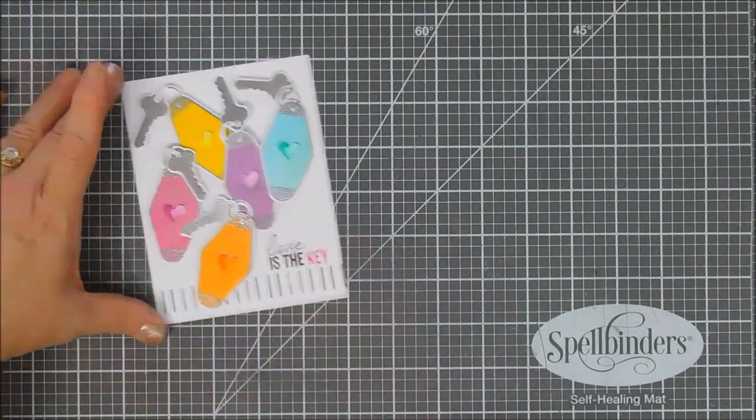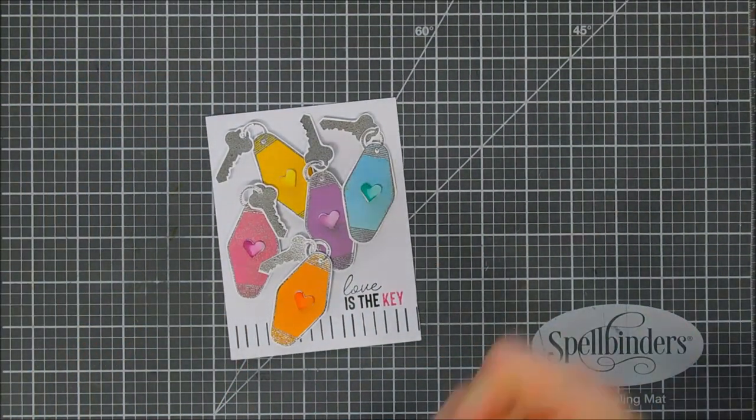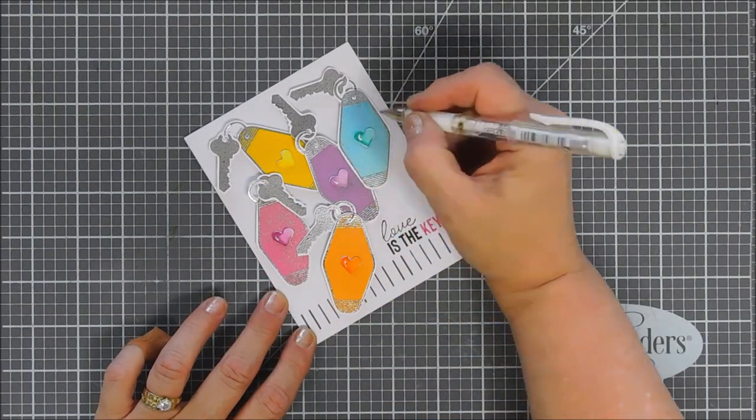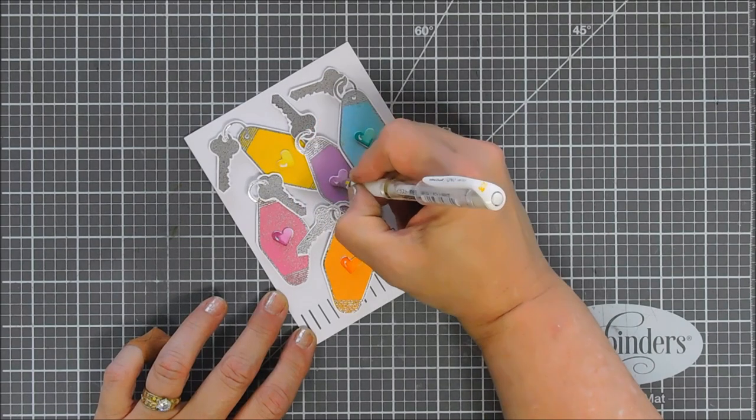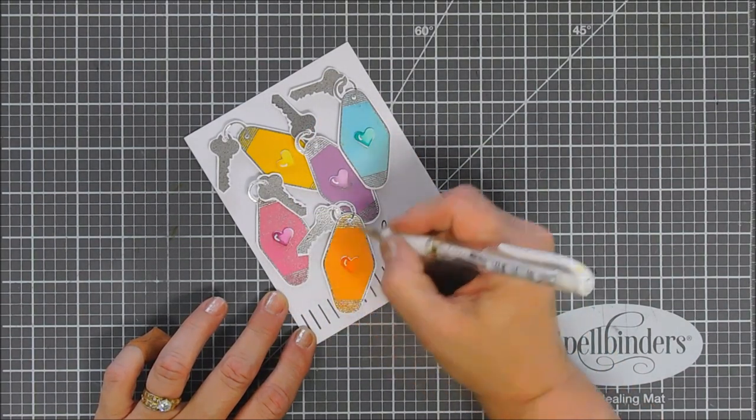Okay now we're going to add bells and whistles. I thought we would highlight each one of the hearts with my white gel pen. I'm basically creating backward C's and this is going to give my little hearts a little added dimension and bring some white to the center of my keys.